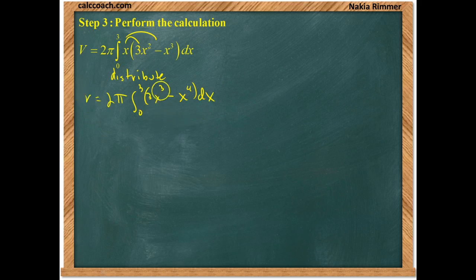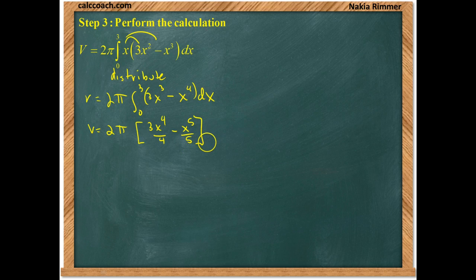Now, we take the antiderivative of each using the power rule in reverse. So, our volume is going to be 2 pi times the expression of 3x to the 4th over 4 minus x to the 5th over 5. That antiderivative needs to be evaluated from 0 to 3.